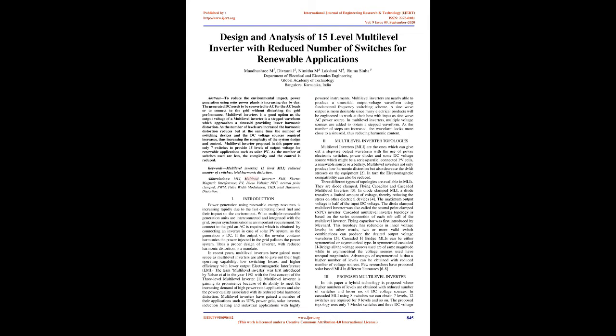The multilevel inverter proposed in this paper uses only 7 switches to provide 15 levels of output voltage for renewable applications such as solar PV. As the number of switches used are less, the complexity and the control is reduced.